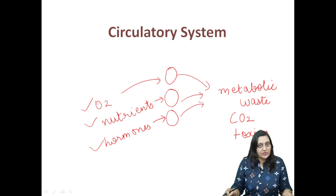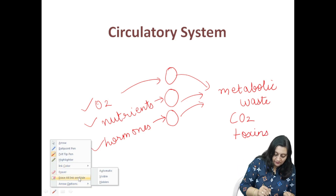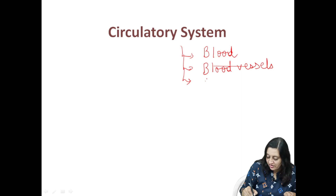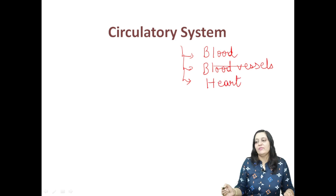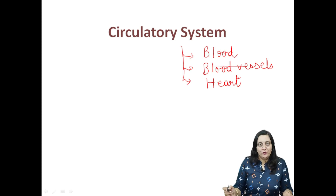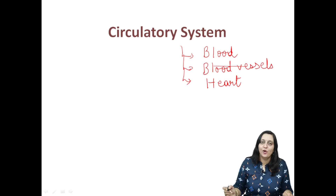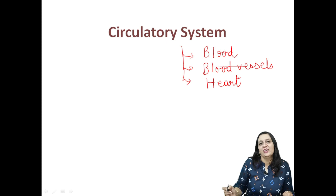So after understanding the need of the circulatory system, let us talk about the various components of the circulatory system. The circulatory system is comprised basically of three components. The first one is blood, the second is blood vessels, and the third component is our heart. Blood is the connective tissue which flows within our body through a particular path provided by blood vessels. Blood is the actual carrier of these substances which are required by cells for their growth and development.